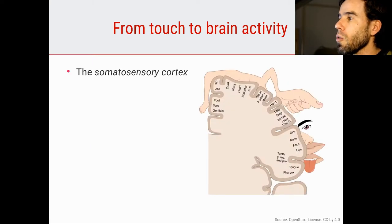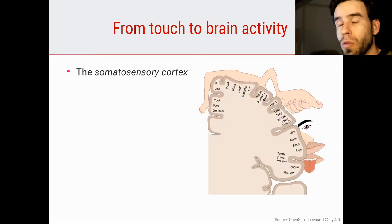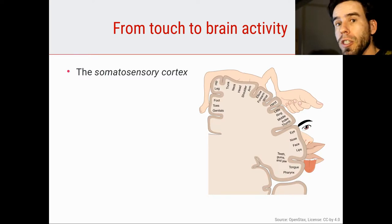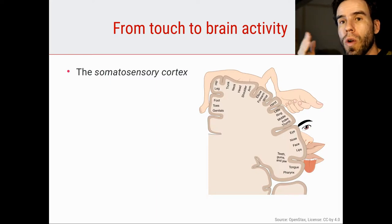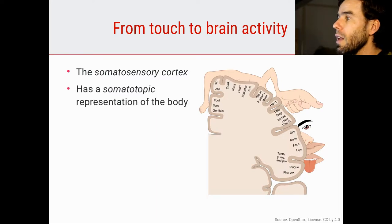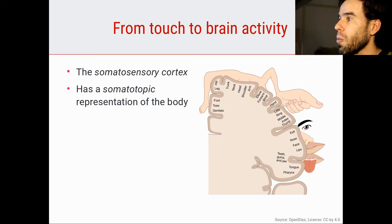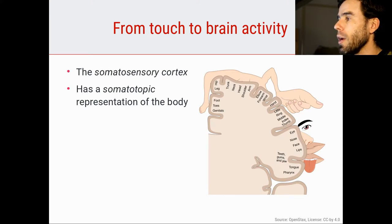We've already taken a look at the concept of topography in the context of vision and audition. For vision, the retinal topography is preserved — a kind of spatial topography. For hearing, the topography of pitch — high versus low pitch sound — is preserved. The somatosensory cortex also has a topography, a very literal topography: it has a somatotopic representation of the body.